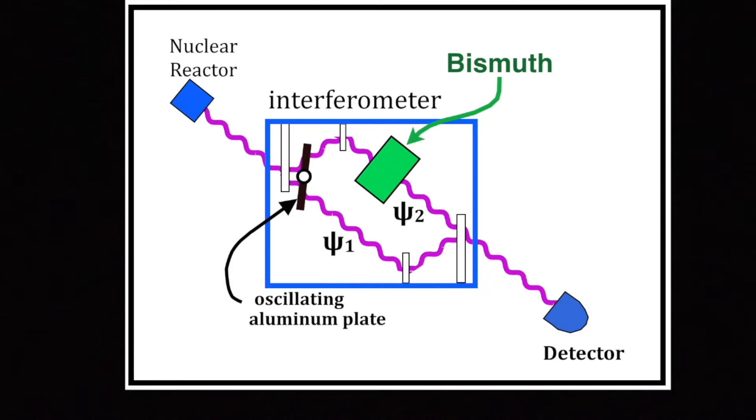When they put bismuth into the upper stream, it slowed down the upper wave packet so that it did not overlap so well with the lower wave packet when they recombined and left the interferometer. Therefore there was a lower height to the sine waves, which is to say less interference. Eventually, when they reached 12 millimeters or more of bismuth, there was no more interference at all.